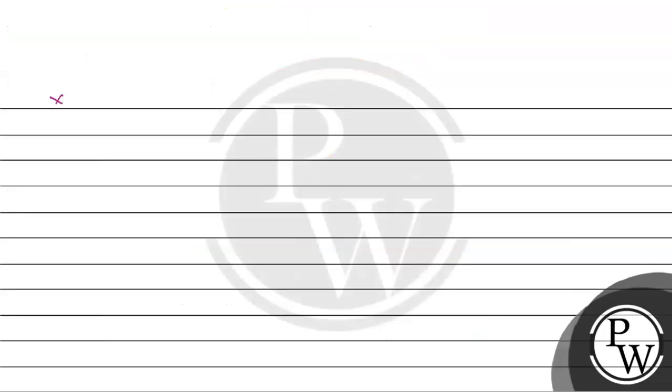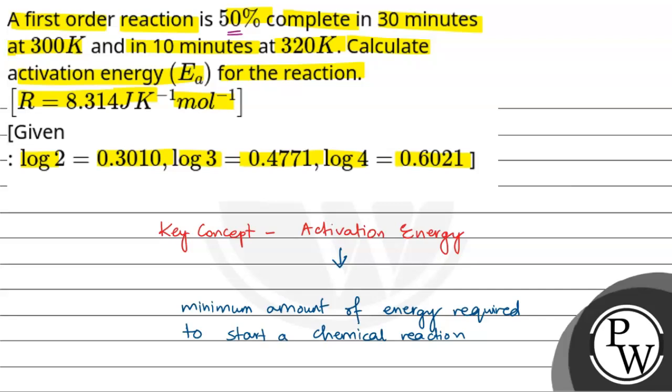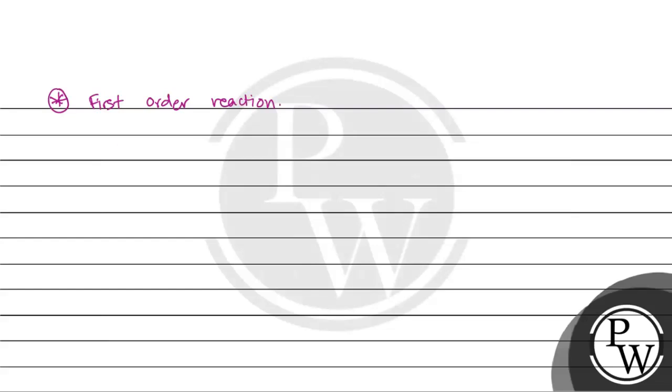First of all, the question states it is a first order reaction. The question also says that 50% reaction is complete within 30 minutes at 300 Kelvin. That means the half life T-half is 30 minutes at 300 Kelvin.